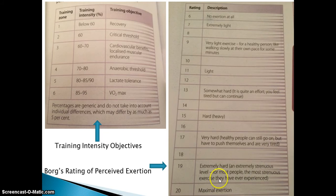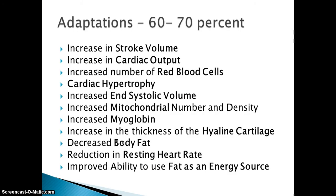If we look at 60% to 70% — I apologise, this is really wordy. You're just going to have to pause this, rewind it back, make your notes, and do a bit of reading because there's some quite tricky stuff here. You need to listen to what's being said and process that. Some of these terms may be new to you, some hopefully won't be at all. So the top two: we're going to get an increase in stroke volume and an increase in cardiac output.